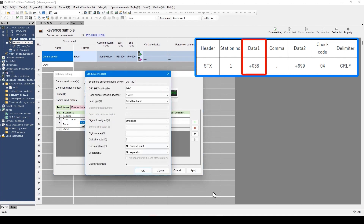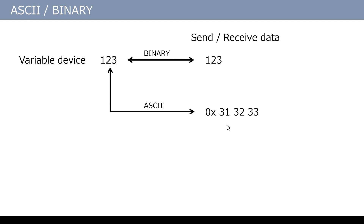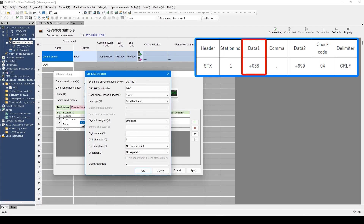Next, I will explain about ASCII and binary. In Protocol Studio, the unit automatically converts ASCII and binary. When binary is selected and 123 is stored in the variable device, the sending data should be binary data 123. When ASCII is selected in Protocol Studio, the unit automatically converts the string 123 to 313233, the hexadecimal ASCII data string, and sends it. Normally, a ladder program to convert binary to ASCII is required, but in Protocol Studio, all conversions from binary to ASCII are conducted by the communications unit. This time, I want to convert the value stored in the device to ASCII and send, so I select ASCII variable.